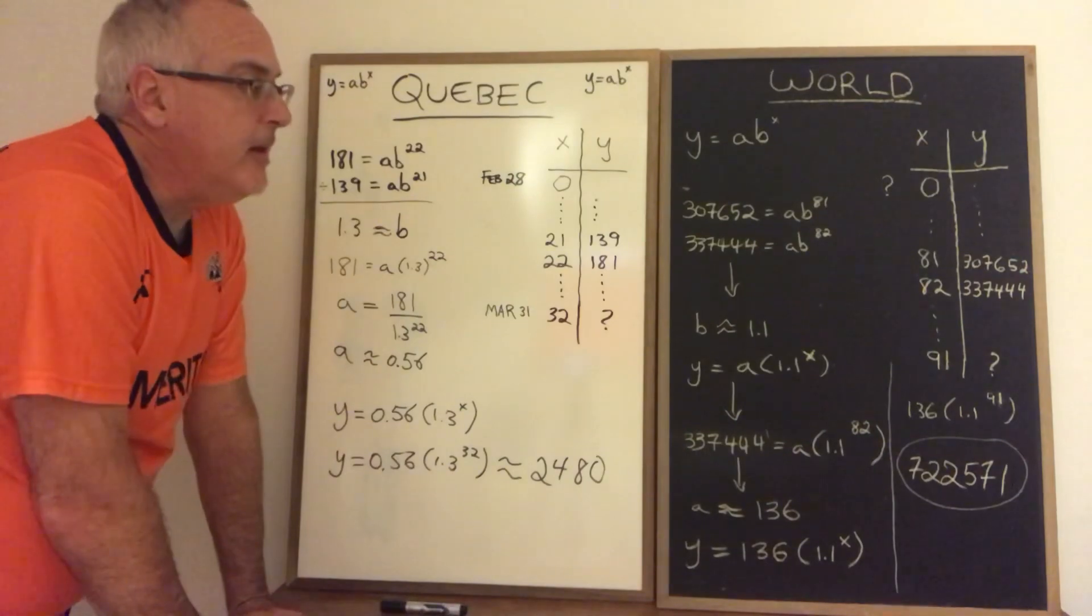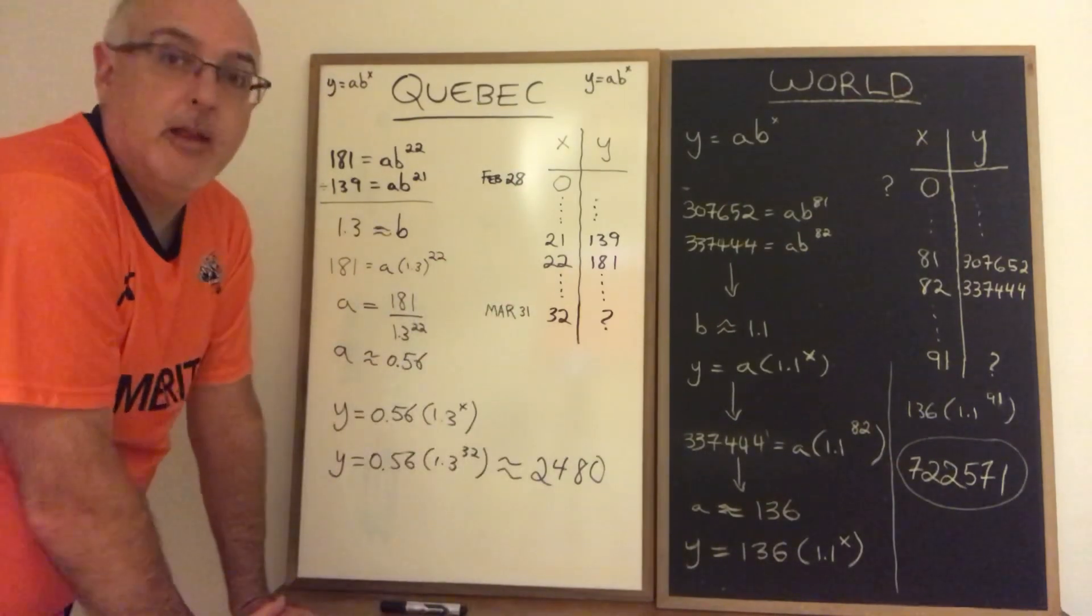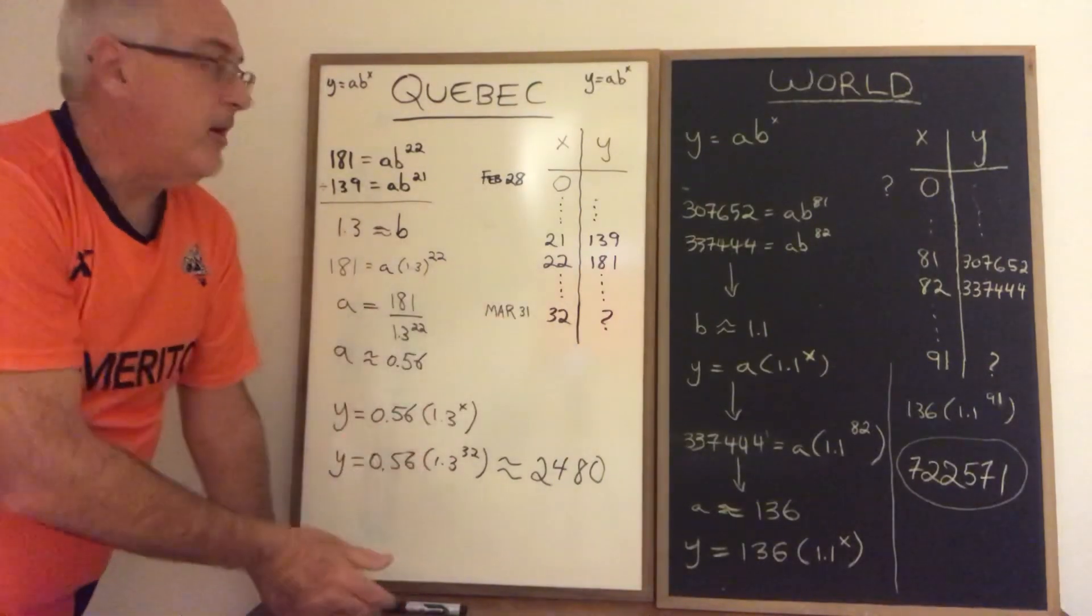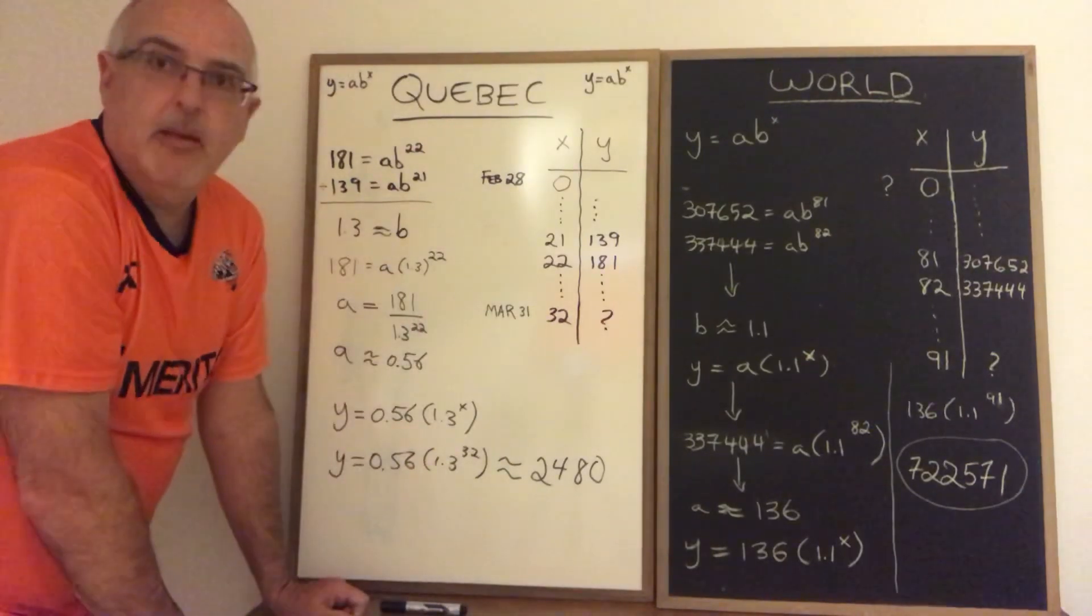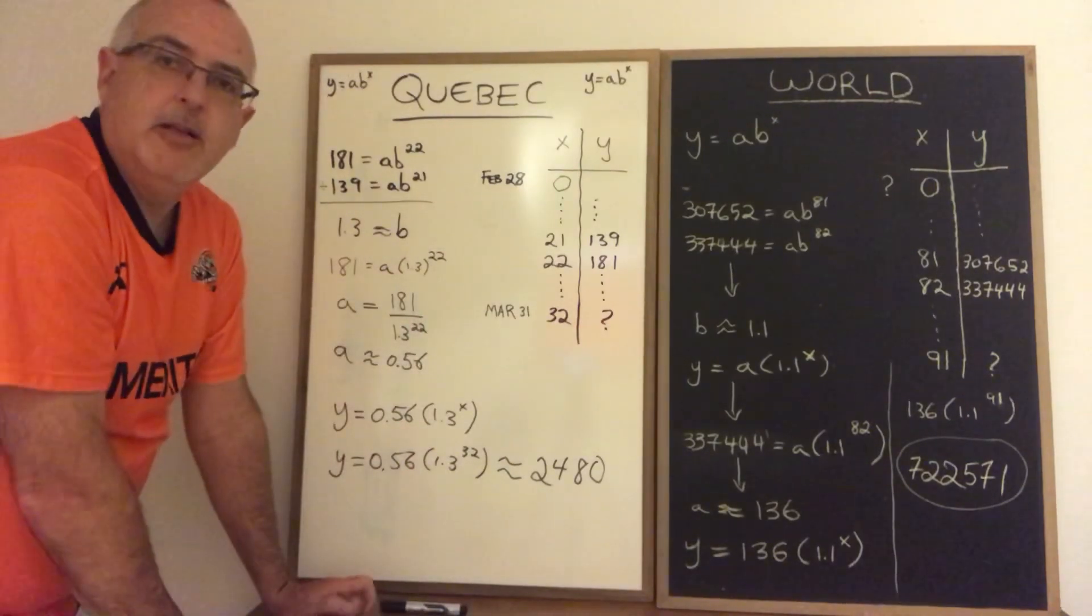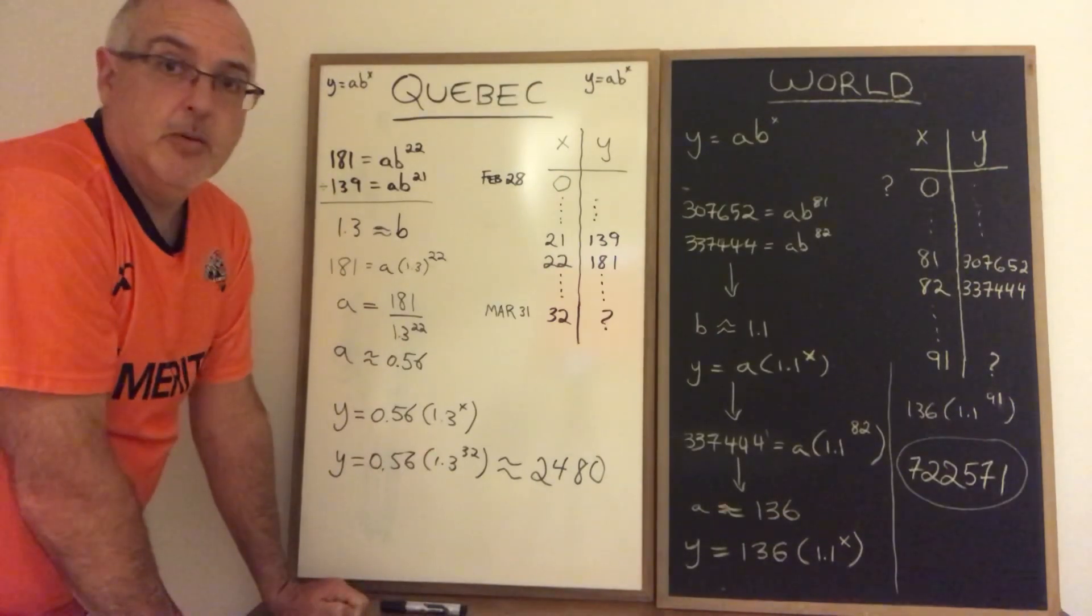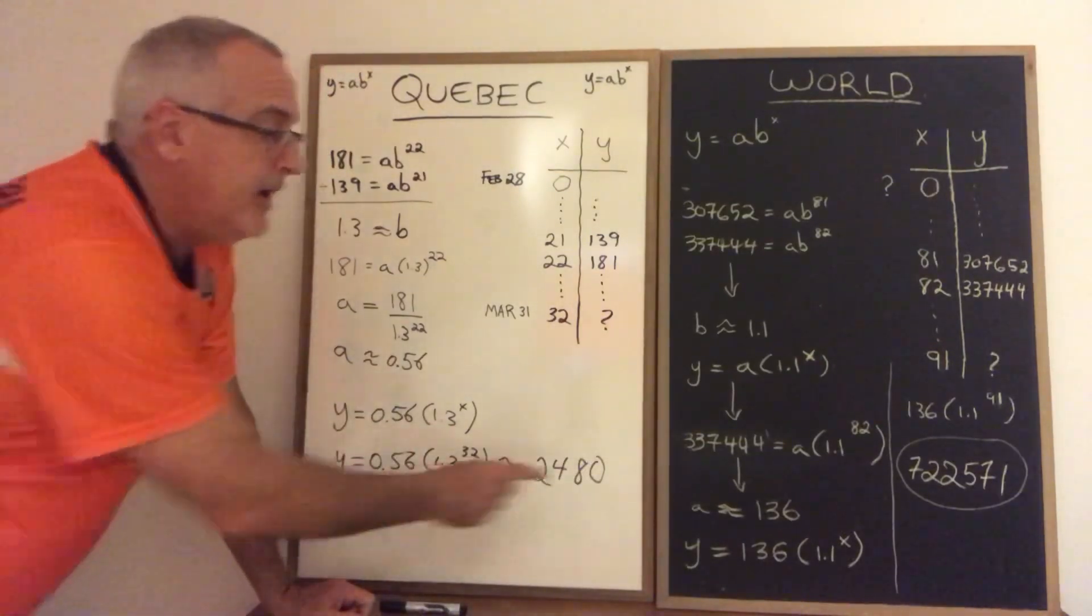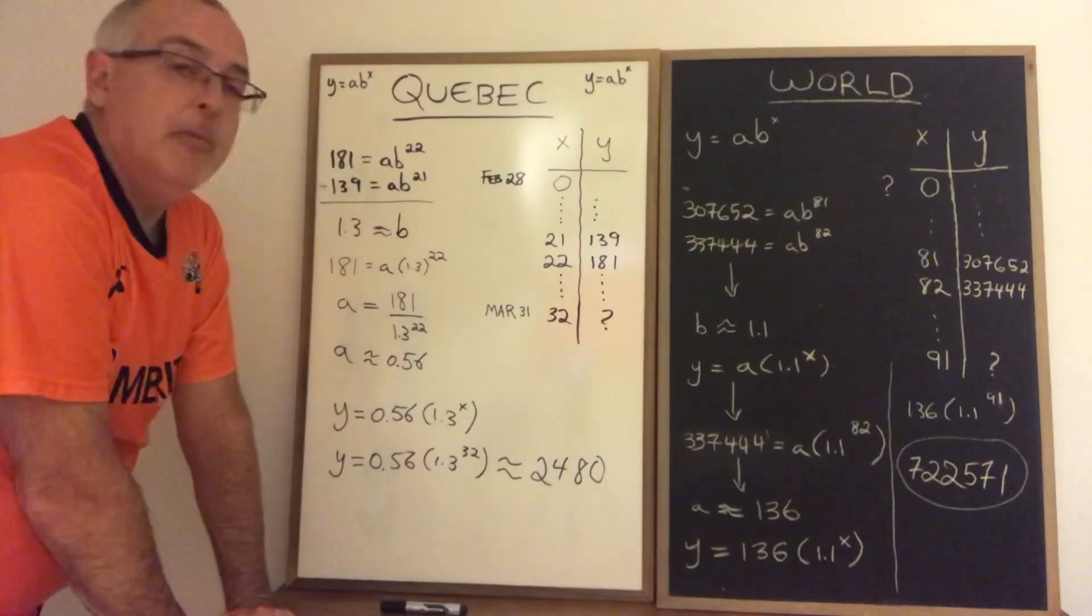Well one thing that we see that already makes this situation look imperfect, look like the approximation that it is, is our b values are not the same, our a values are not the same. In the case of the b values 1.3 and 1.1 might seem like they're very similar, close together, but these numbers will make a very big difference when you have an exponential equation. But the a value is even worse. I have 0.56 here and I have 136 there. That's really wildly diverging values for my a.